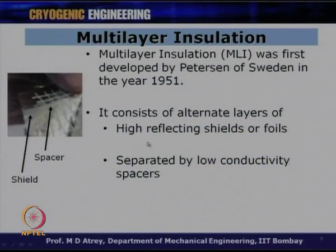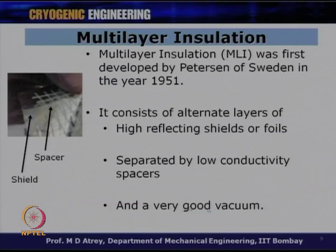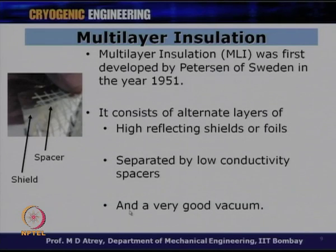Multilayer insulation consists of alternate layers of highly reflecting shields or foils separated by low conductivity spacers and a very good vacuum. It works only when there is a very good vacuum — no gaseous presence, no free molecular conduction, no convection. If conduction and convection are ensured to be absent, only then is multilayer insulation effective.